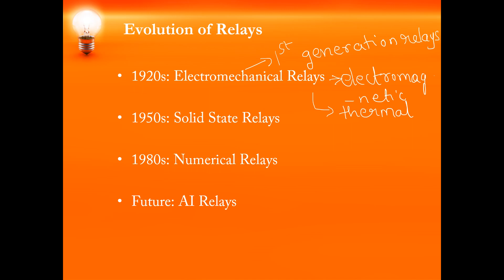The electromagnetic relays were working mainly on the principle of either attraction or induction. Attraction type electromagnetic relays work both with AC as well as DC, whereas induction type relays work only on AC. They had a few limitations: first, a low speed of operation, and second, component failure leading to relay failure. That is why electromechanical relays were mostly used as backup relays.